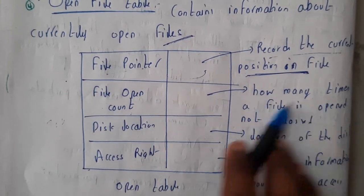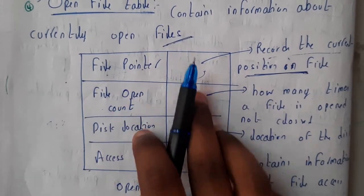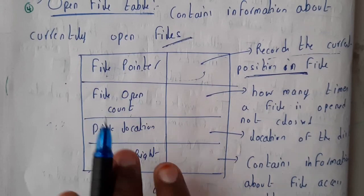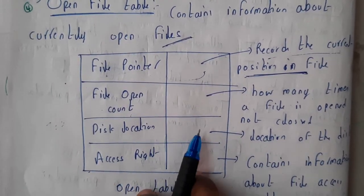File open count is nothing but how many times a file is opened and not closed. How many times you open that particular file - like you opened it thrice, once, twice, like that. Disk location...